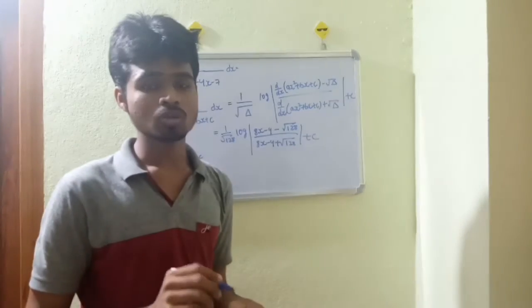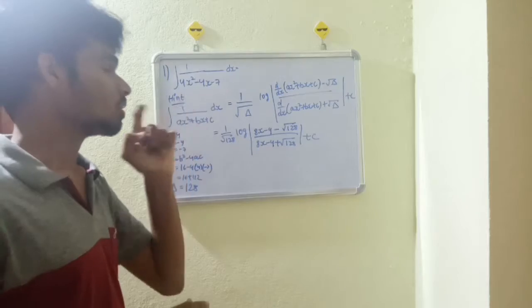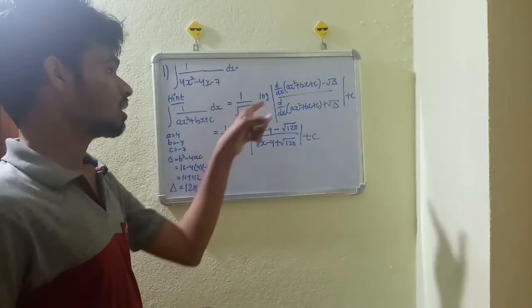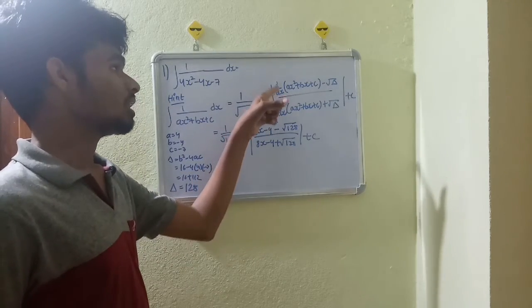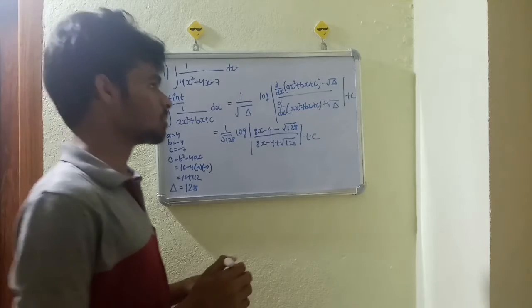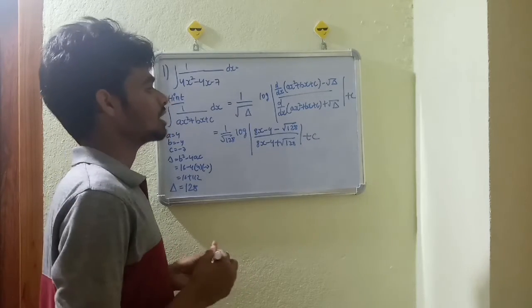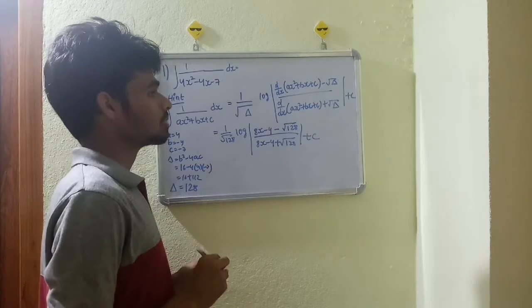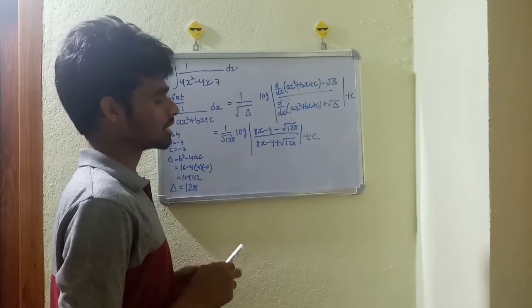When b and c are both negative, the formula used is: negative 1 by root(delta) log of (d/dx of ax² + bx + c minus root(delta)) by (d/dx of ax² + bx + c plus root(delta)) plus c.